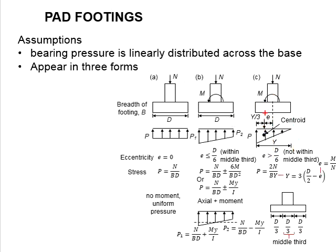Under such circumstances, the eccentricity will be greater than D per 6. That means it is no longer within the middle third of the base.